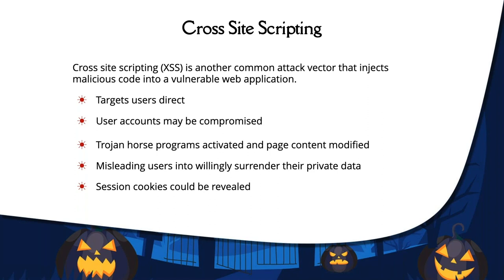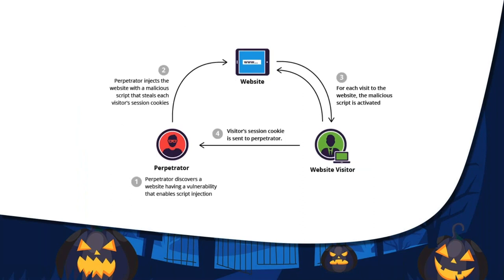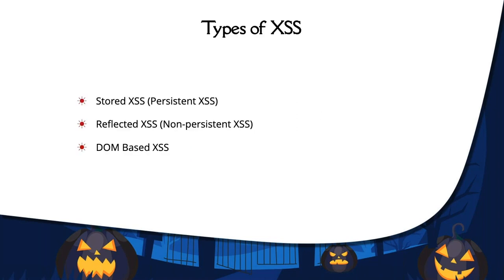The attacker injects a malicious code into a vulnerable web application. How it differs from SQL injection is that it targets the users directly. Its main objective is to compromise user accounts, steal their information, steal the user's cookies, and also activate hidden Trojan horse programs in the user's computer. The attacker first searches for a vulnerable website, injects a malicious script — let's assume that script steals cookies — and then each website visitor gives all their cookies to the perpetrator. There are three different kinds of XSS: stored, reflected, and DOM-based.